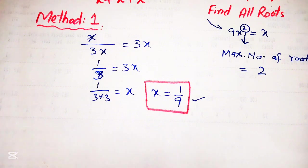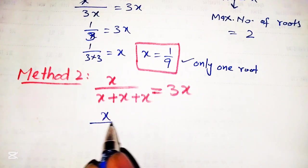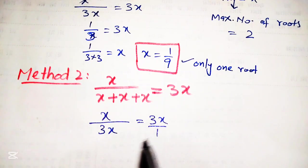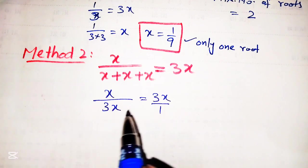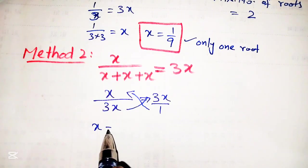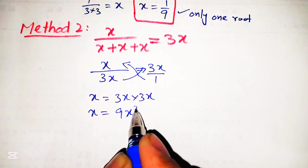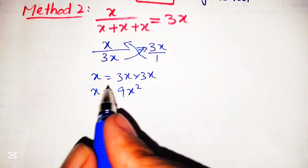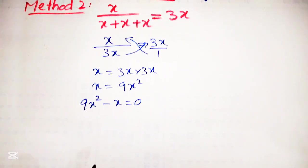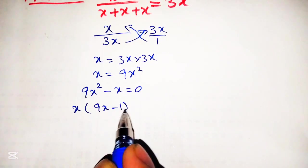Now we will use method number 2 in which we will find all two roots of this given equation. In method 2, we will rewrite the given equation as x over x plus x plus x is equal to 3x, which we can write as over 1. Multiplying by using the cross-multiplication method, we get x into 1 is equal to x, and 3x multiplied by 3x. Hence x is equal to 9x squared. Taking x to the right-hand side, we get 9x squared minus x is equal to 0.